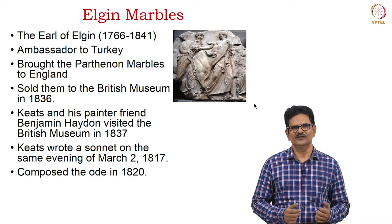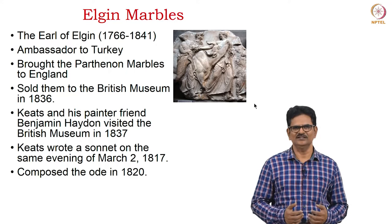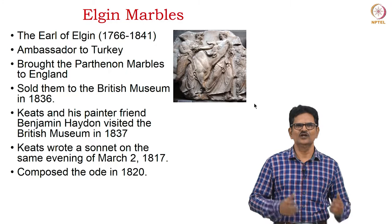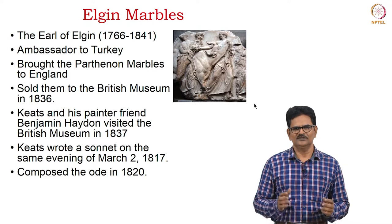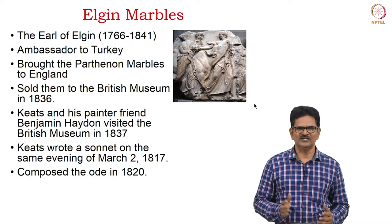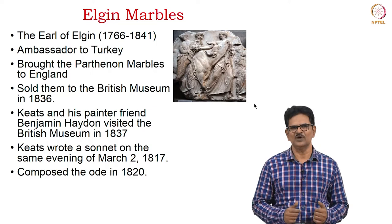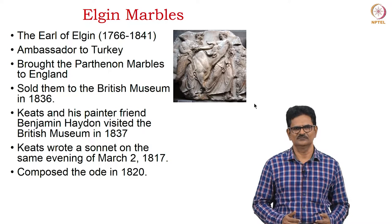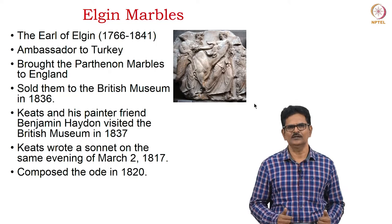Keats visited the British Museum and saw the Elgin Marbles. These were brought to London by the Earl of Elgin, who was an ambassador to Turkey. He brought the Parthenon marbles to England and later sold them to the British Museum in 1816. Keats and his painter friend Benjamin Haydon visited the British Museum in 1817 and saw these marbles. On seeing them, Keats wrote a sonnet on the same evening of March 2nd, 1817. He also later composed the 'Ode on a Grecian Urn.'